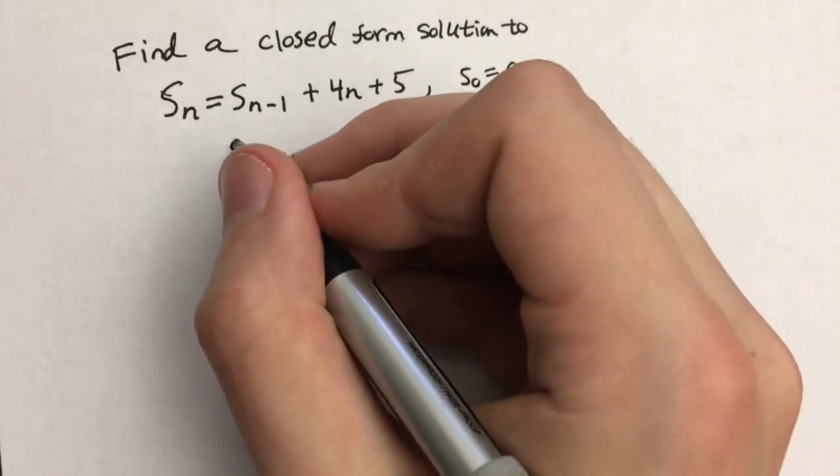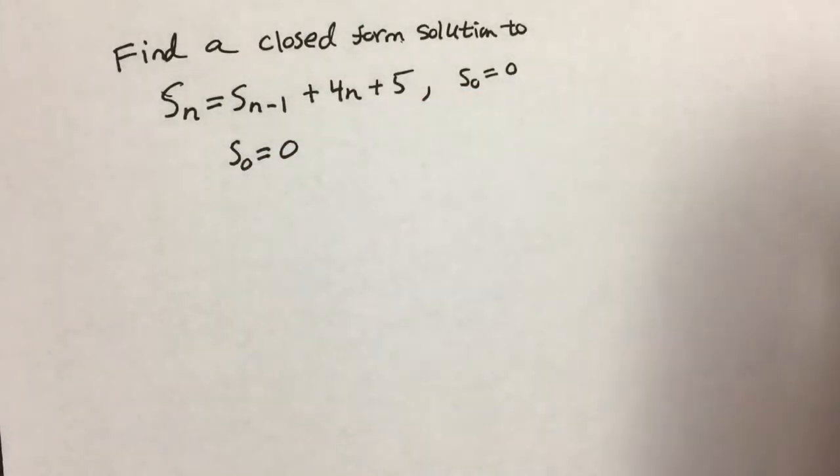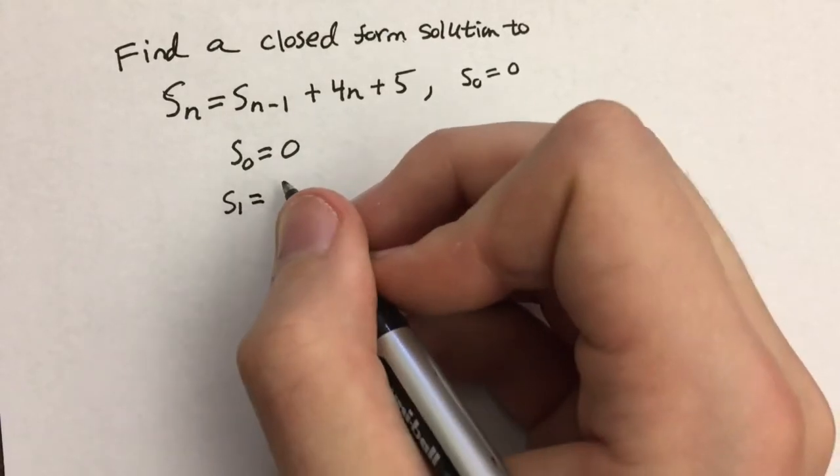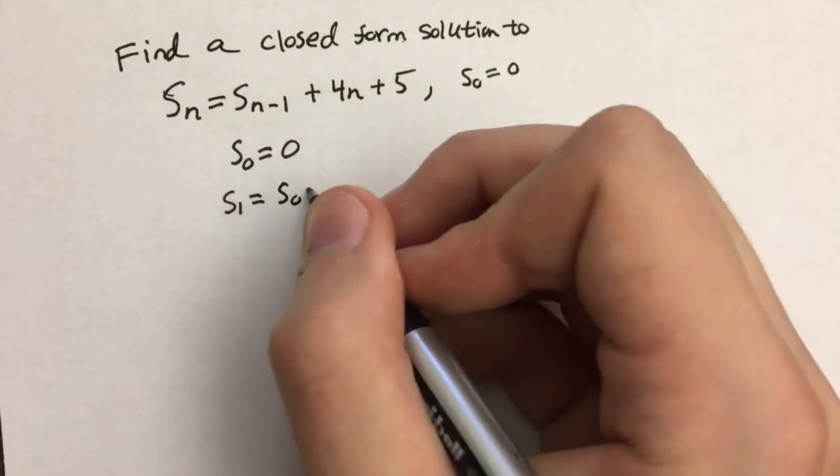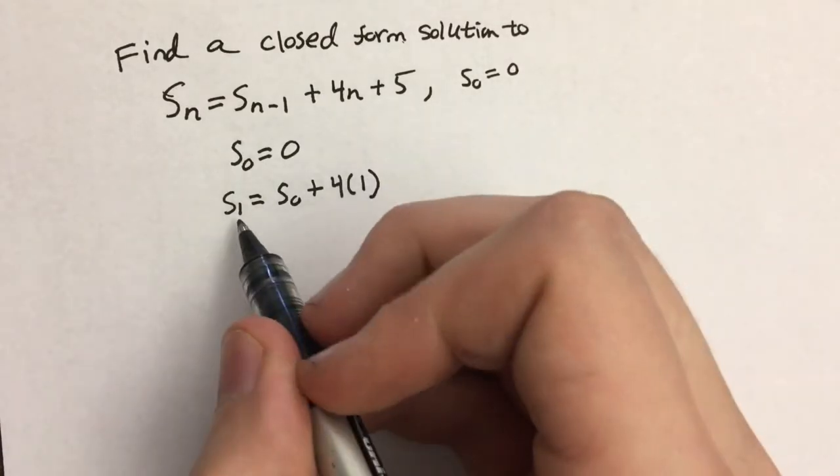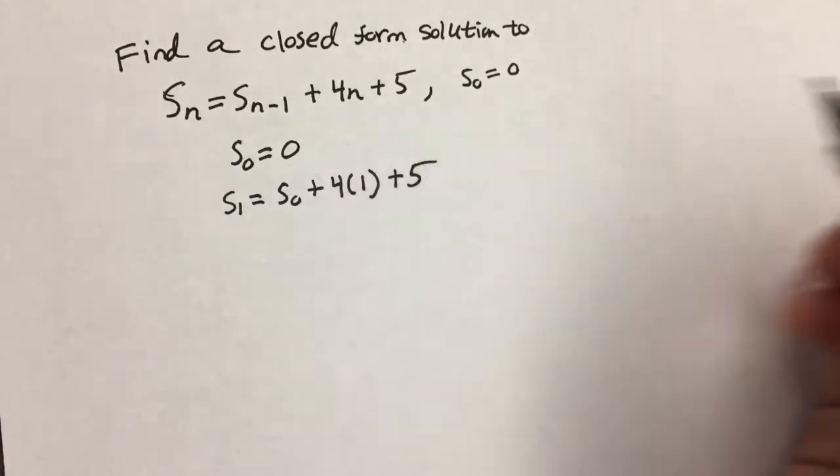So we know because we're given it that the zeroth term is zero. And based on this equation, S sub 1 equals the term that comes before it, S sub 0, plus 4 times 1 because we're in the first term, so n equals 1, plus 5.